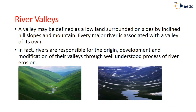Let us see how river valleys are formed. A valley is defined as a low land surrounded on both sides by inclined hill slopes and mountains. Every major river is associated with a valley of its own. Rivers are responsible for the origin, development, and modification of their valleys through the well-understood process of erosion.